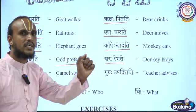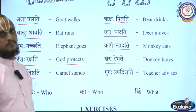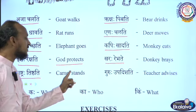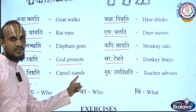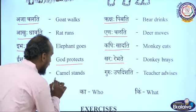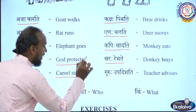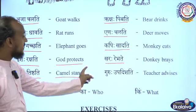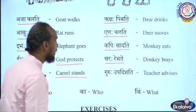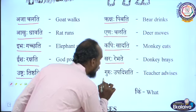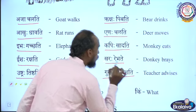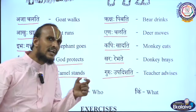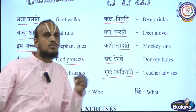The next sentence: Ushtraha Tishthati. Ushtraha means camel. Tishthati means stands. So Ushtraha Tishthati means 'Camel stands.'